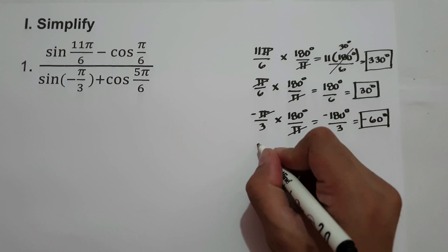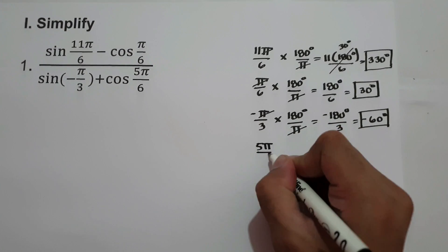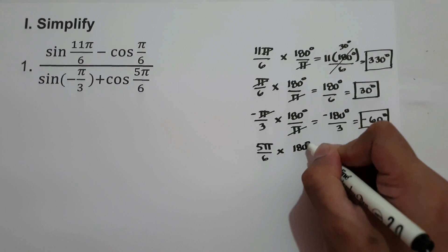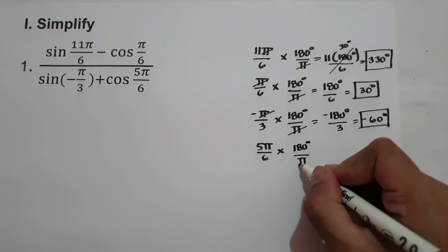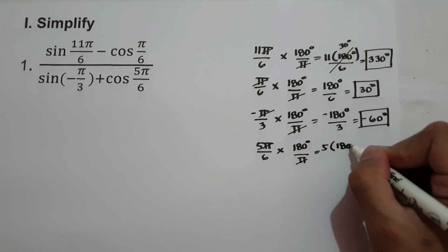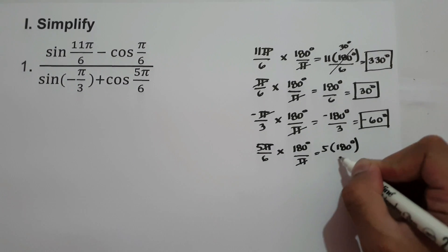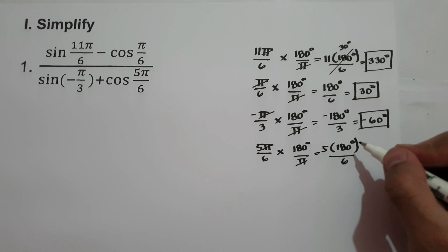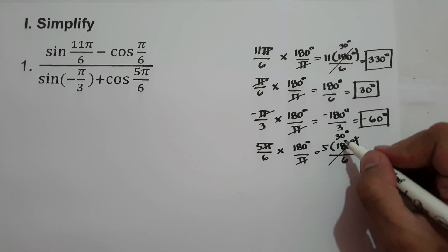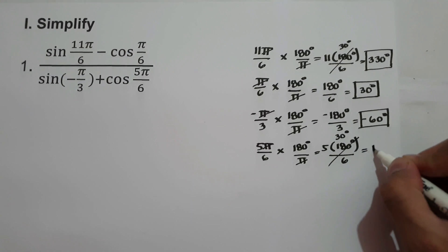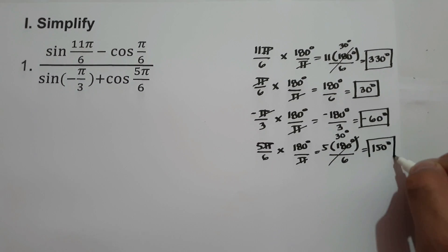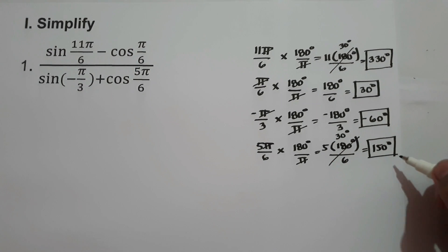And last, we have 5π over 6. Let us multiply by 180 degrees over π. We cancel π, and we have 5 times 180 degrees divided by 6. 180 degrees divided by 6 is 30 degrees, and 30 degrees times 5 is 150 degrees. So 5π over 6 equals 150 degrees.